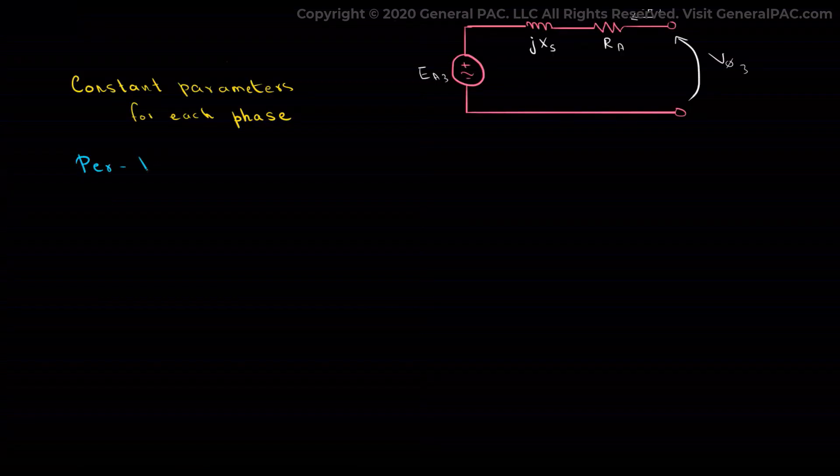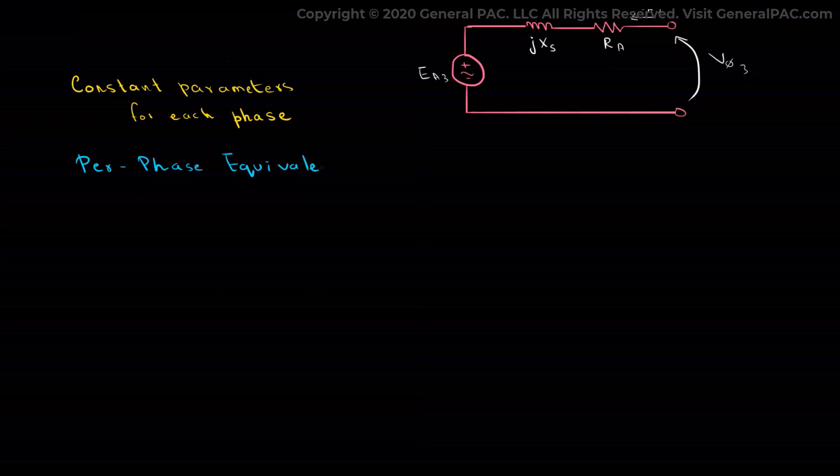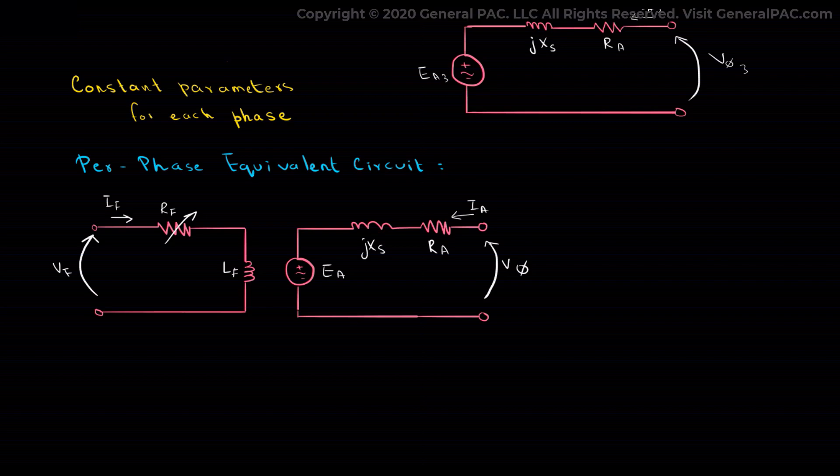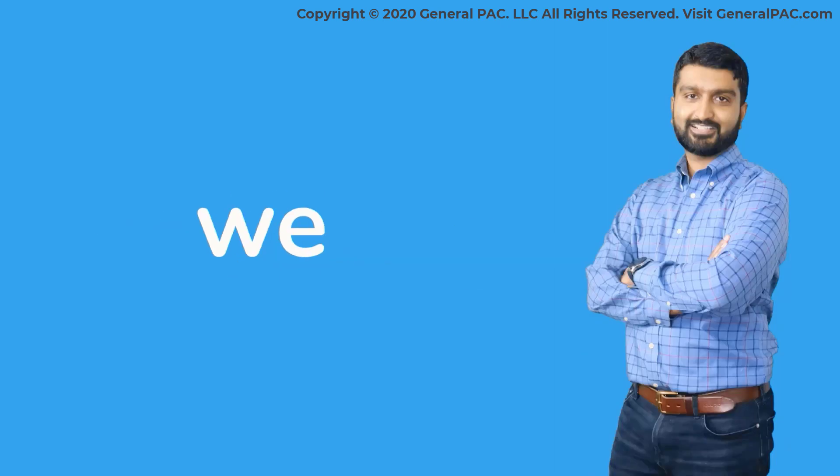When all of the parameters are connected for each phase, then the per-phase equivalent circuit can be modeled as shown below, where the three phases are clubbed together because of uniformity.